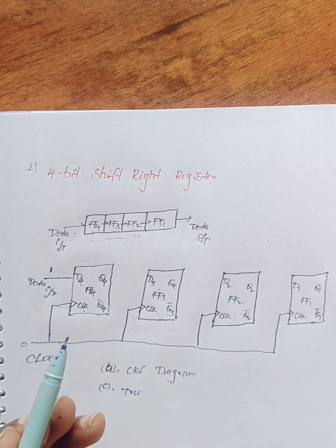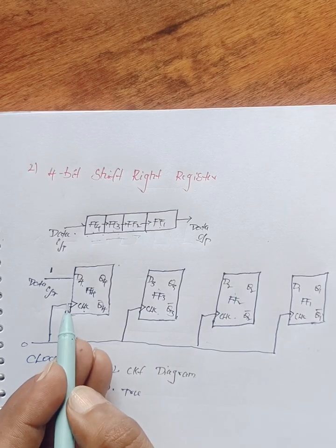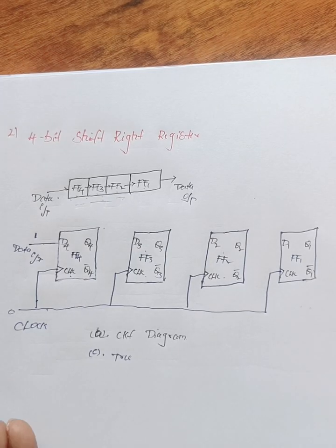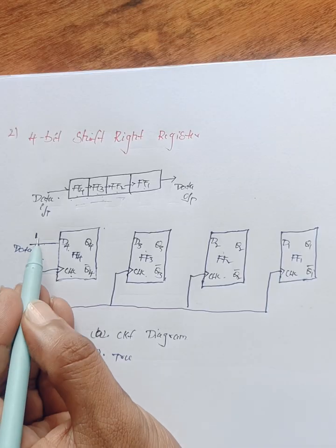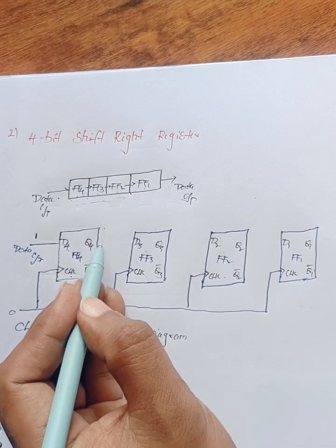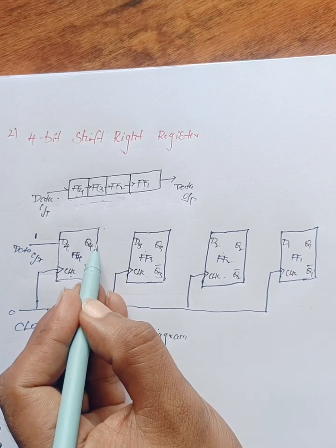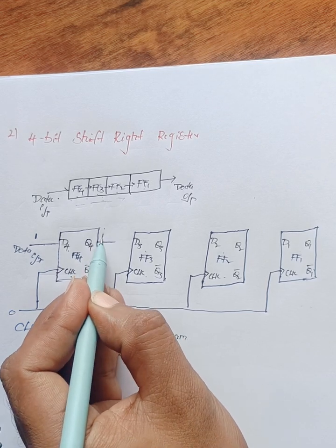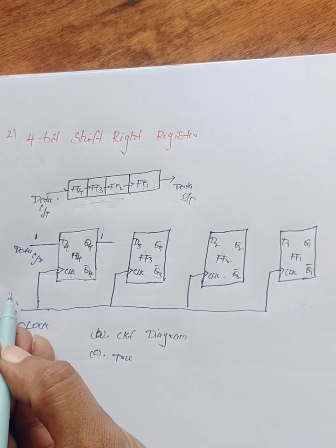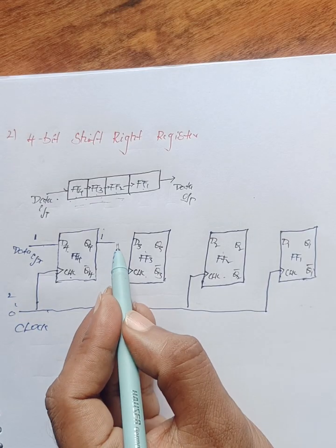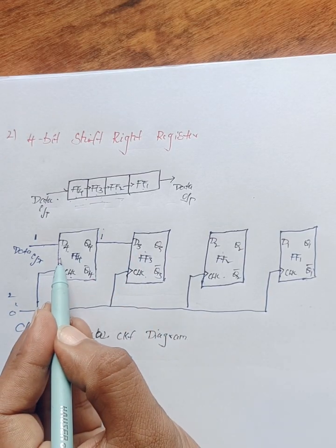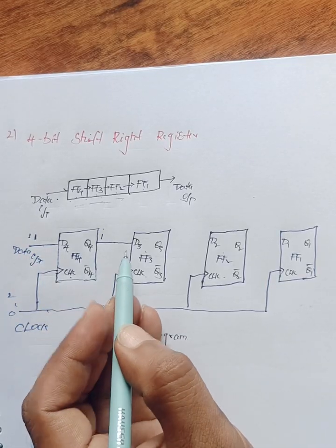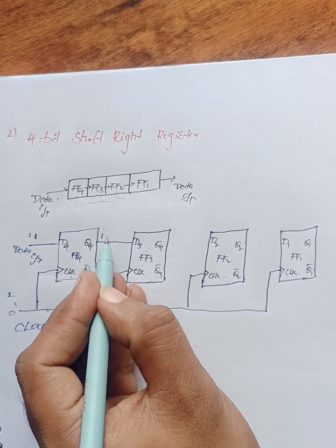Whenever the first clock pulse is applied, data one is loaded into flip-flop D4, so D4 output becomes one. Whenever the second clock pulse is applied, this data is shifted to the D3 flip-flop. Now D4 flip-flop receives fresh data — either one or zero — and D3 gets the previous value.